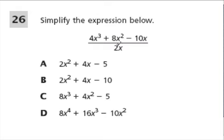Similar problem right here. Each of the parts of the numerator will be divided by the denominator. So we get 4x to the third over 2x, plus 8x squared over 2x, minus 10x over 2x.